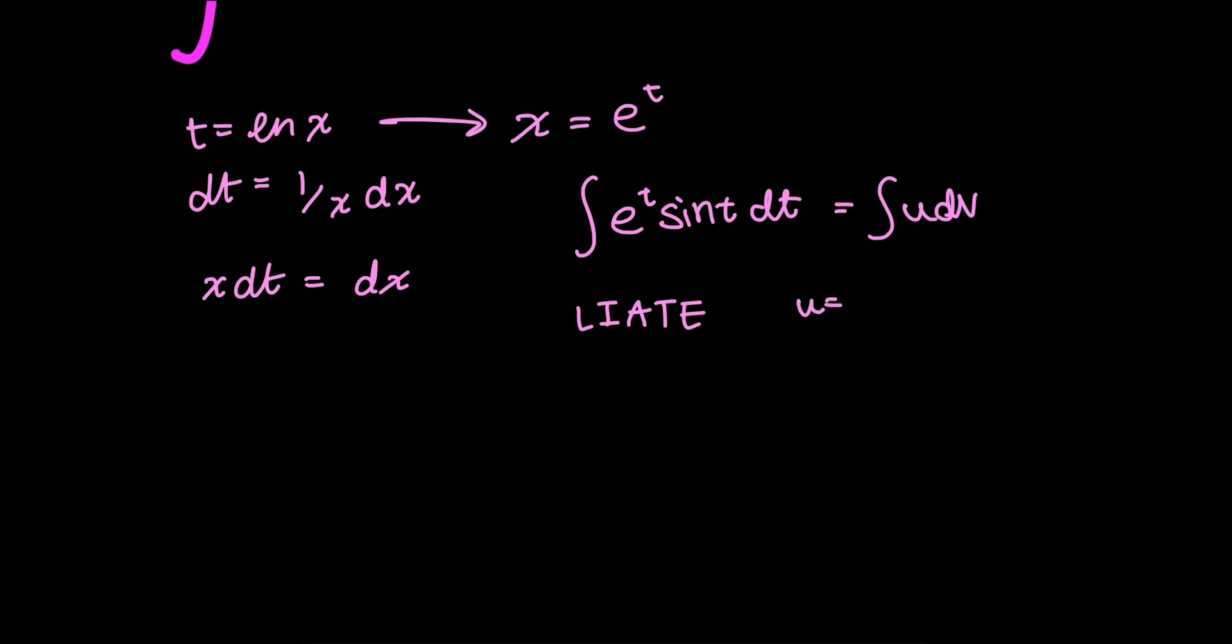u is going to be sine t, and therefore du is cosine t dt, and then dv is e to the t dt. And v is the integral of e to the t dt, which is just e to the t, because it's an exponent.